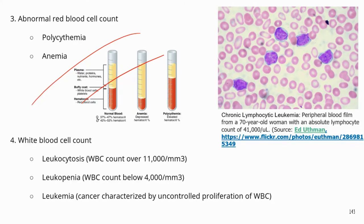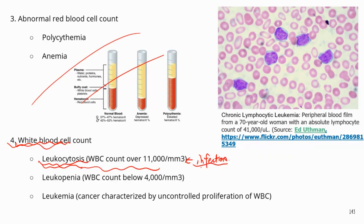The last blood condition we'll look at involves white blood cell count. The first condition is leukocytosis — when the body has too high a white blood cell count. This can be caused by infection, which is usually reflected by an increase in white blood cell count. The second condition is the opposite: leukopenia, where 'penia' means poverty, meaning you do not have enough leukocytes.